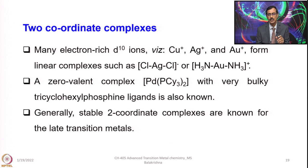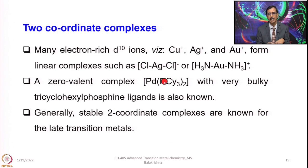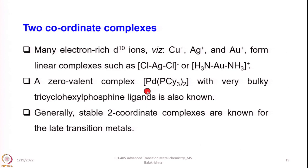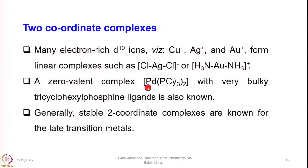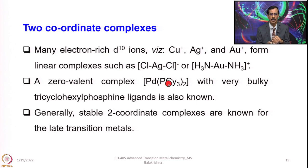However, with bulky ligands it is possible to stabilize palladium with coordination number 2. Phosphines — especially bulky phosphines — come in very handy. Tricyclohexylphosphine, because of its bulkiness, has stabilized palladium with 2-coordination in a linear geometry. Similarly, tri-tert-butylphosphine also stabilizes palladium in linear geometry with coordination number 2. Stable 2-coordinate complexes are generally known for the late transition metals.